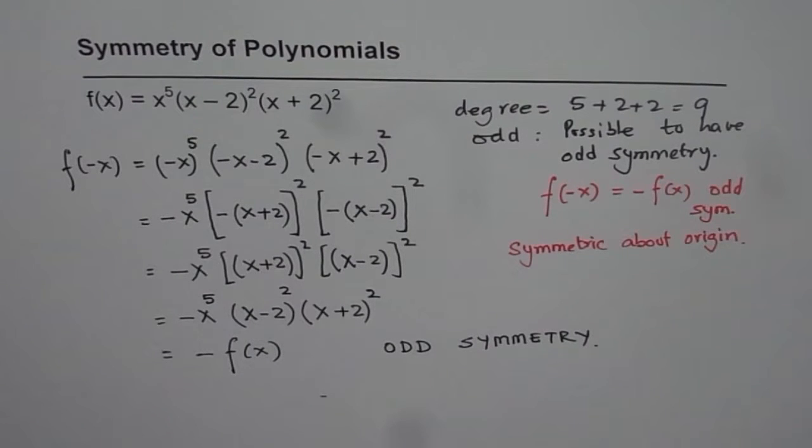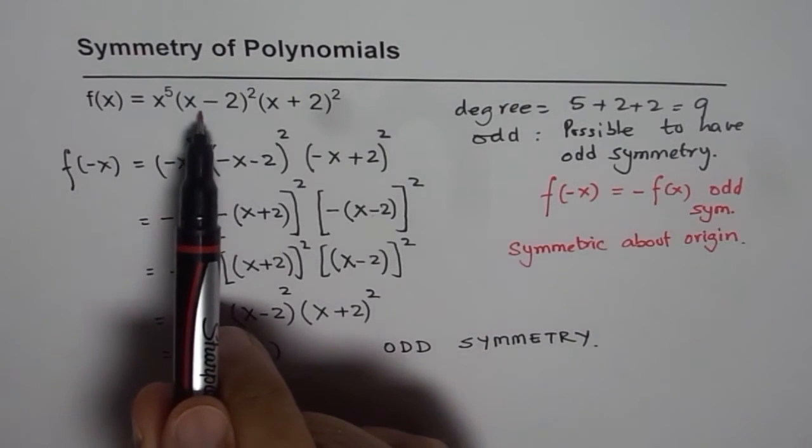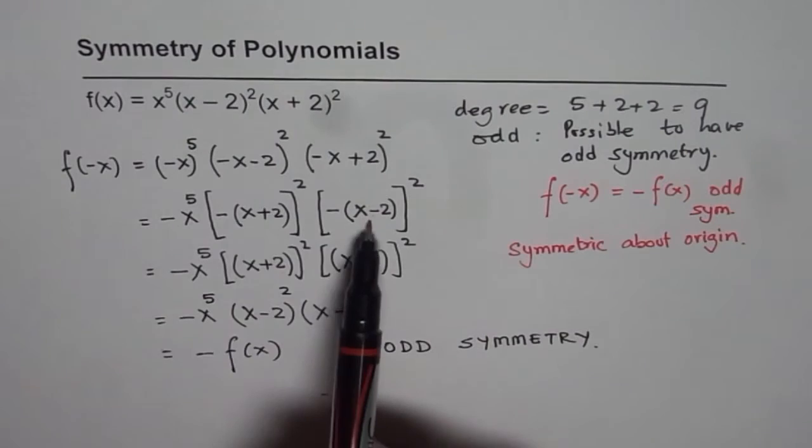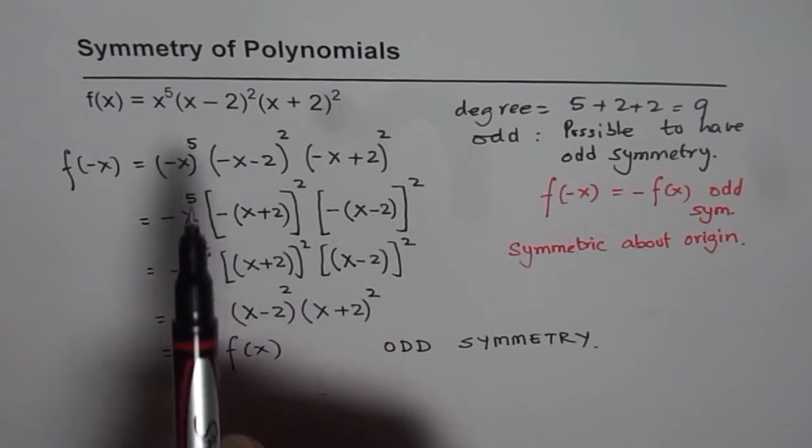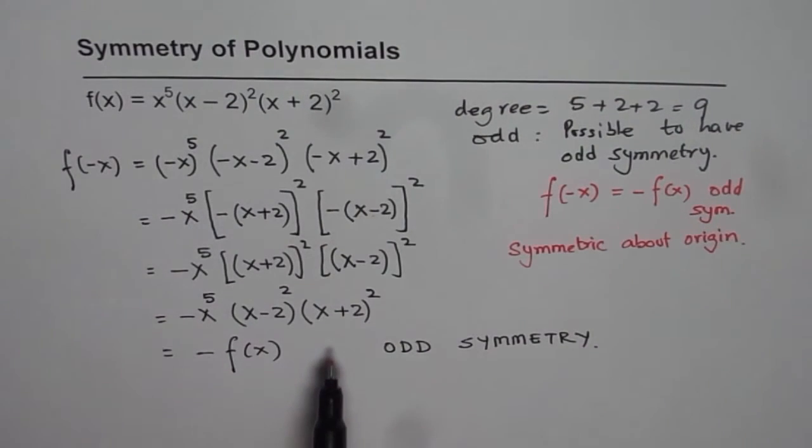Now, it is kind of important to note that since these two factors were (x - 2) and (x + 2), we got the odd symmetry. Otherwise, we would not have got odd symmetry. If these numbers would have been different, this would not have odd symmetry. So that made it possible for odd symmetry in this case. That is a good observation to make.